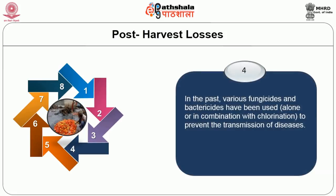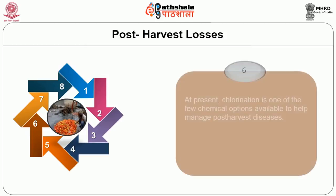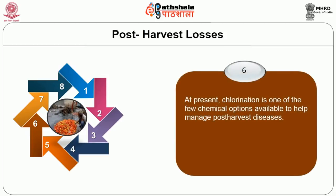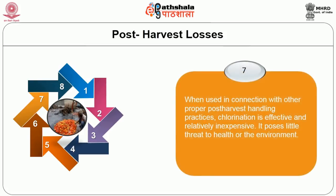In the past, various fungicides and bacteriocides have been used alone or in combination with chlorination to prevent the transmission of diseases. These materials were often favoured over chlorination because they provide some residual protection after treatment. At present, chlorination is one of the few chemical options available to help manage post-harvest diseases. When used in connection with other proper post-harvest handling practices, chlorination is effective and relatively inexpensive, posing only little threat to the environment or health.